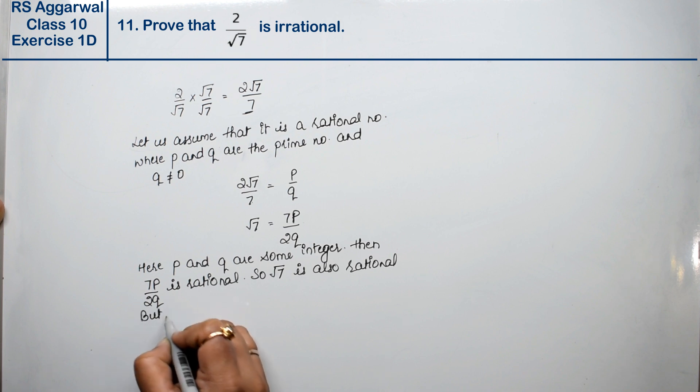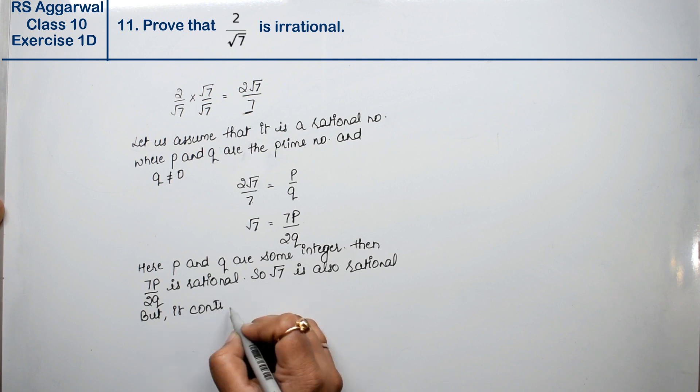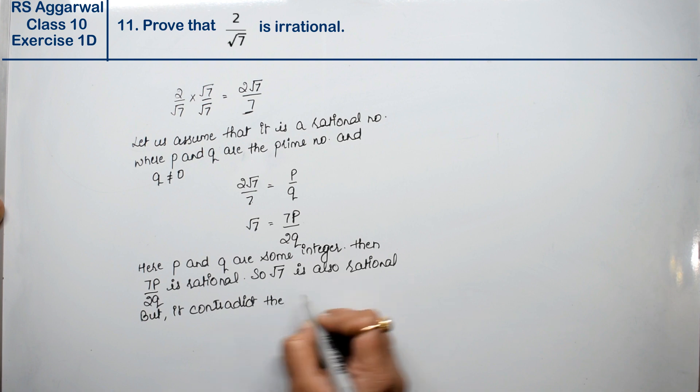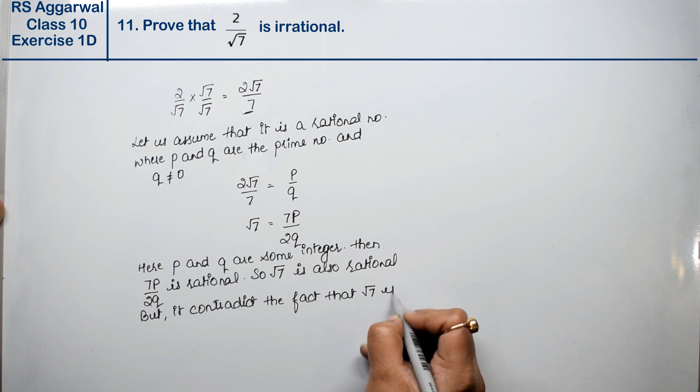So this contradicts the fact that root 7 is an irrational number.